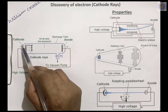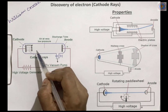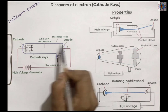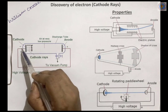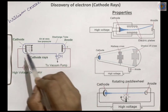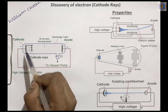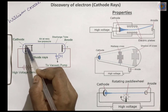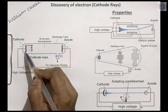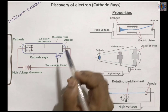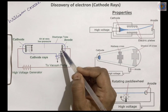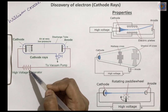What is a discharge tube? This is a hard glass tube fitted with two metal plates. These are the two metal plates — they are called electrodes. One is your cathode and another one is your anode. Cathode is connected to the negative terminal and anode is connected to the positive terminal.